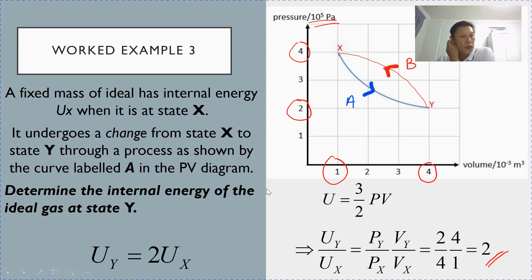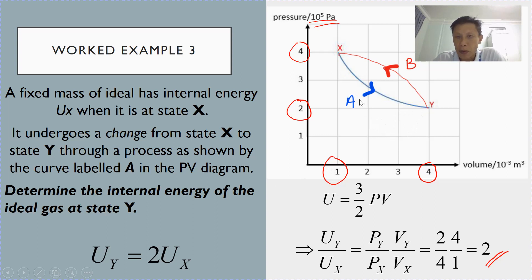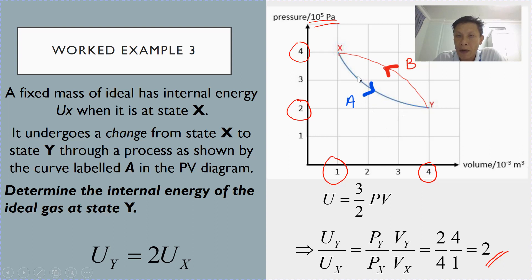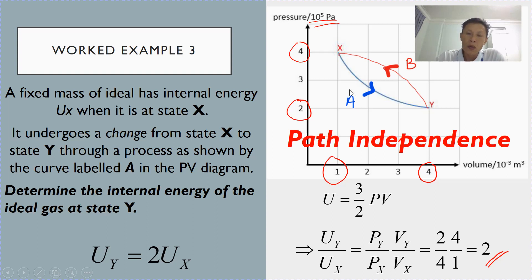Before going to the next part of work example 3, it's important to note that during the calculation, we did not take into account the process at all. Even if the gas goes from state x to y by another path, whether a straight line or any other path, it does not matter. So what we are shown here is that the change in internal energy is path independent.